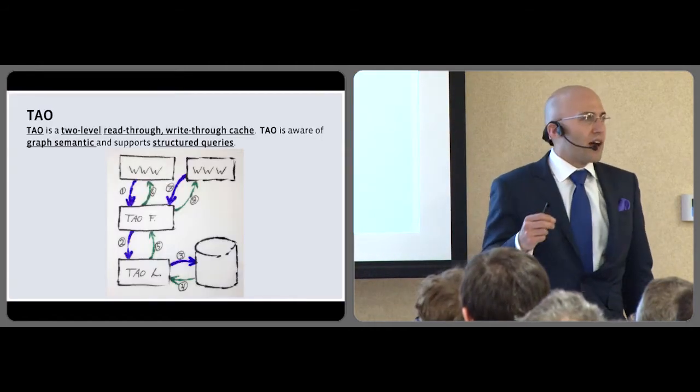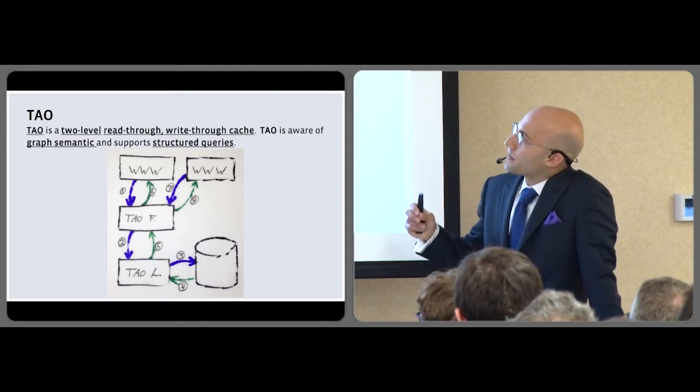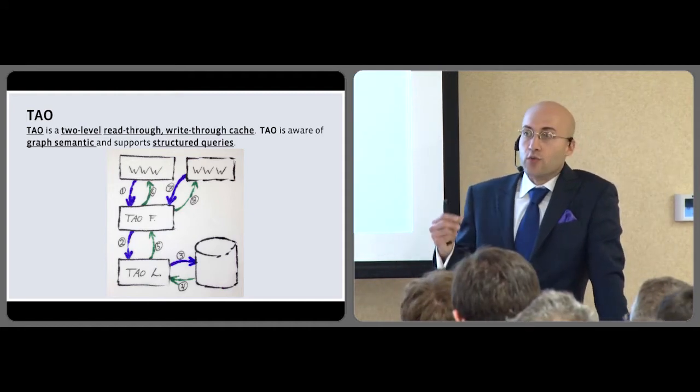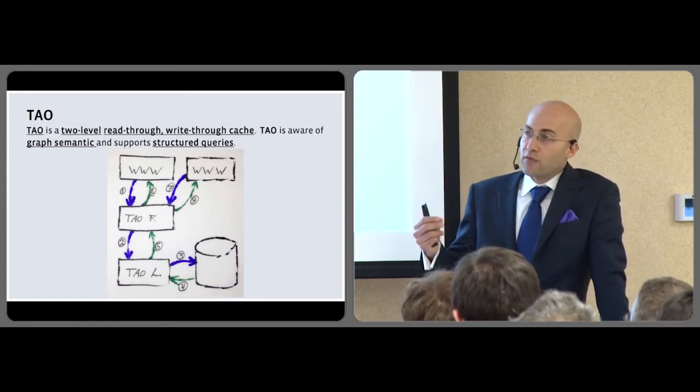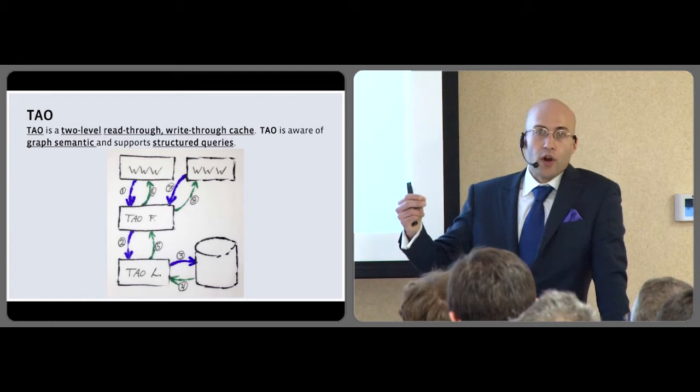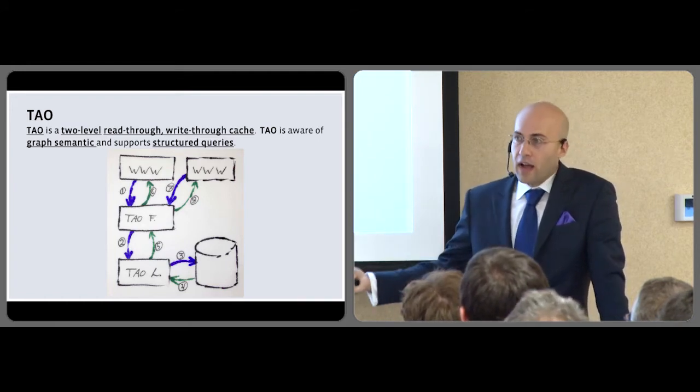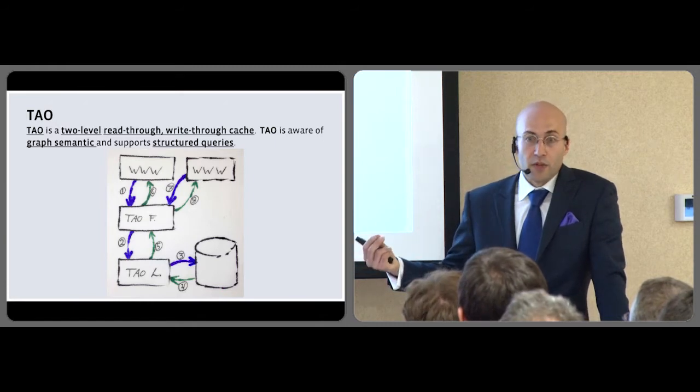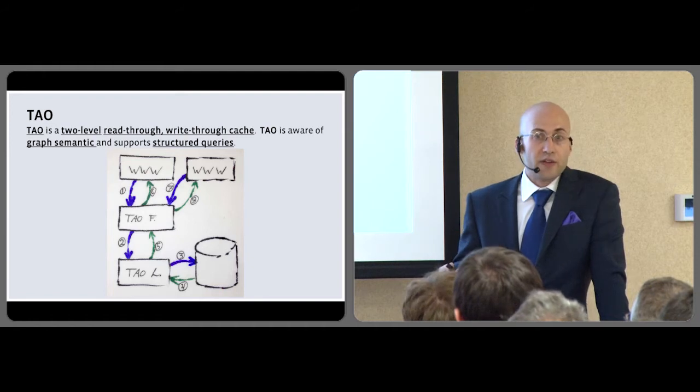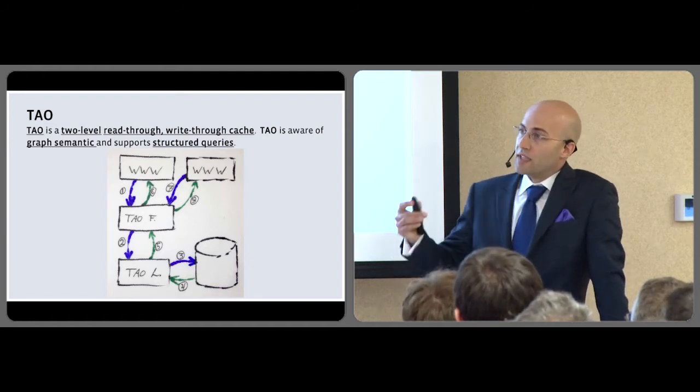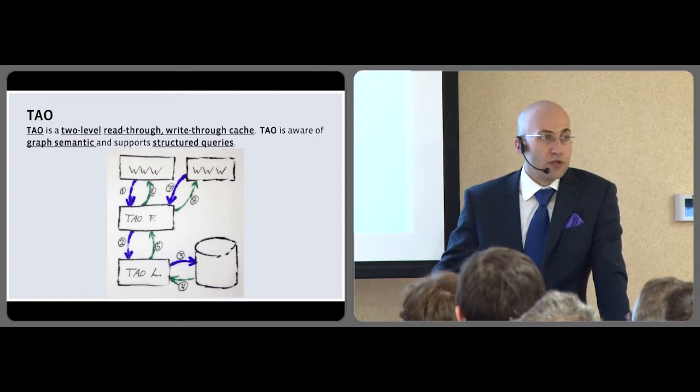That system that we developed internally is called TAO. TAO does many things. And for now, I just want you to remember that TAO is a read-through and write-through cache. And that means that if we're looking for a piece of content, we are going to ask TAO. If TAO doesn't have it in its cache, it's going to be responsible for retrieving that data from the database. Similarly, when we write a new value in the social graph, we send it to TAO, and TAO is responsible for delivering that new information to the database.